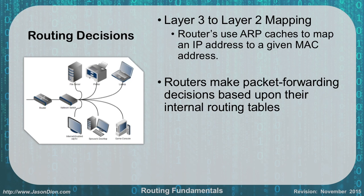Routers make their packet forwarding decisions based upon their internal routing tables. Usually we're going to have a route called the default gateway as well — if the router doesn't know where traffic goes, it's going to send it out that default gateway.